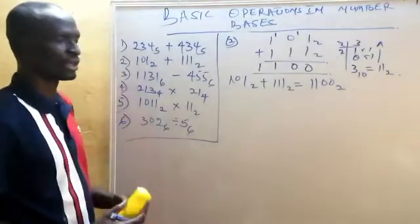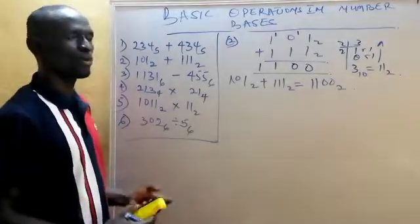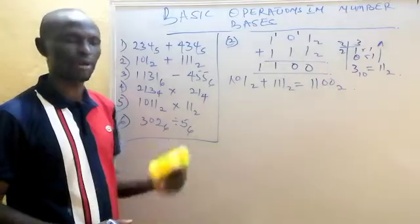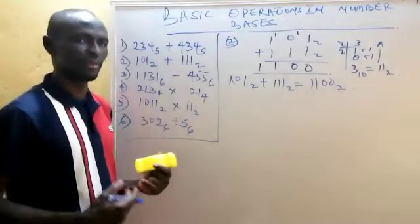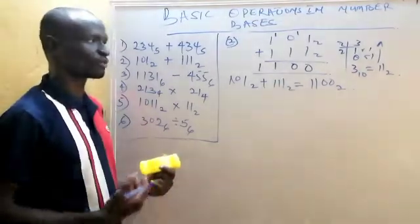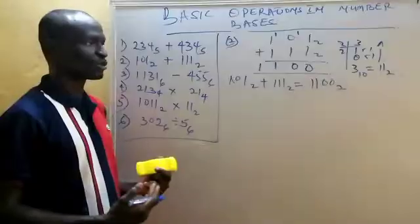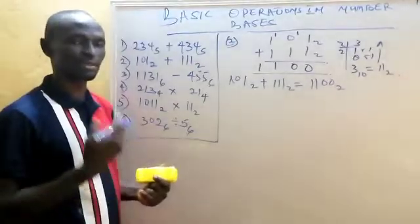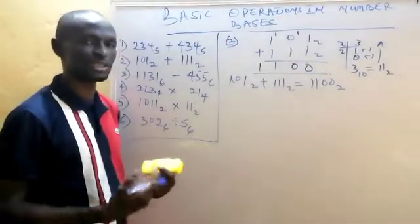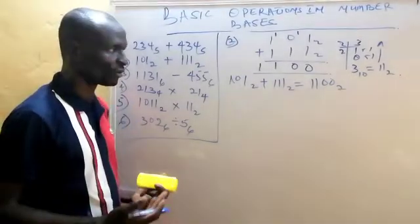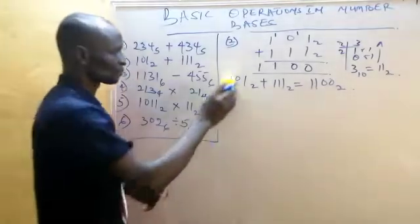With this, I know you have a good understanding of addition in number bases. Let's now use this example to understand subtraction. The same way we carry for every group of the base — if it was base five you carry five, if it was base six, for every six you carry one. So now let's treat subtraction.